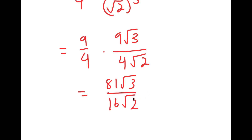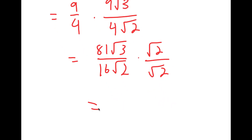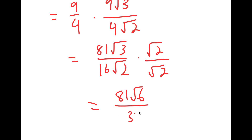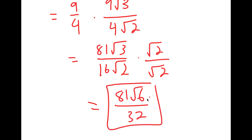We don't want any radicals in our denominator, so I'm going to multiply this by the square root of 2 over the square root of 2. So I get 81 root 6 over 16 times 2, which is 32. So this is my answer.